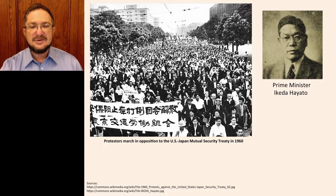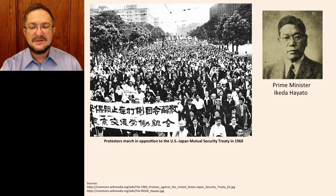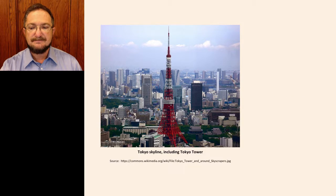He was replaced by Ikeda Hayato, a Yoshida disciple who famously announced plans to double people's average income within 10 years. His focus was on the economy, not on constitutional reform or remilitarization. And it worked. People became caught up in the growing economy and enjoying better living standards, and Ikeda's plan reached its goal in just seven years. When the Constitutional Revision Committee released its report during his administration, not many people were interested anymore. The socialists, although never in power at this time, held enough seats as a minority in parliament to block any efforts at modifying the Constitution. So there were few calls for change in the 1960s or 70s.